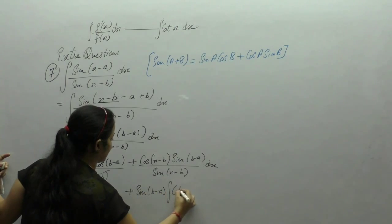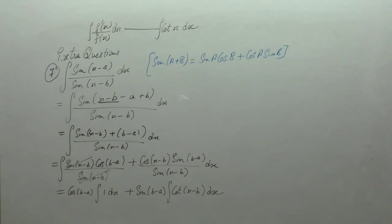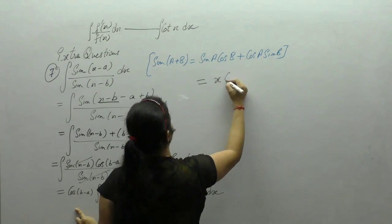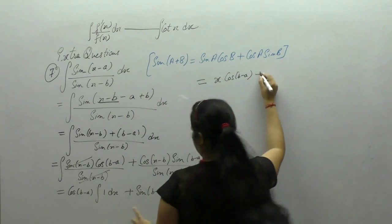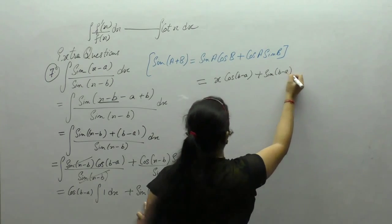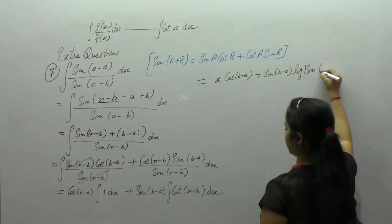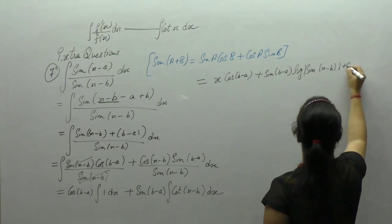Applying the integrals: integral of 1 is x, and integral of cot is log of sine. The final answer is x · cos(b minus a) + sin(b minus a) · log|sin(x minus b)| + c.